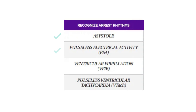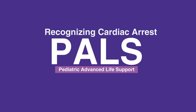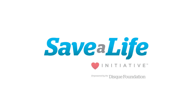It is also helpful to be able to recognize arrest rhythms such as asystole, pulseless electrical activity (PEA), ventricular fibrillation (VF), and pulseless ventricular tachycardia (VT). The upcoming videos will cover details on these arrest rhythms. This concludes our lesson on recognizing cardiac arrest. Next, we will review pulseless electrical activity and asystole.